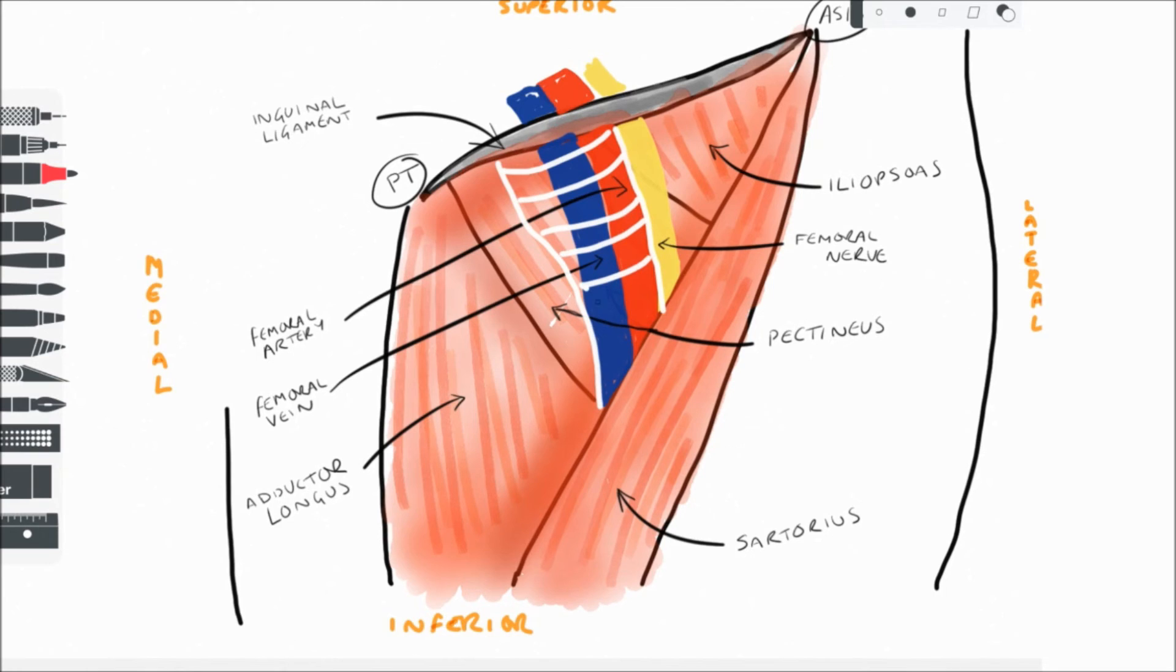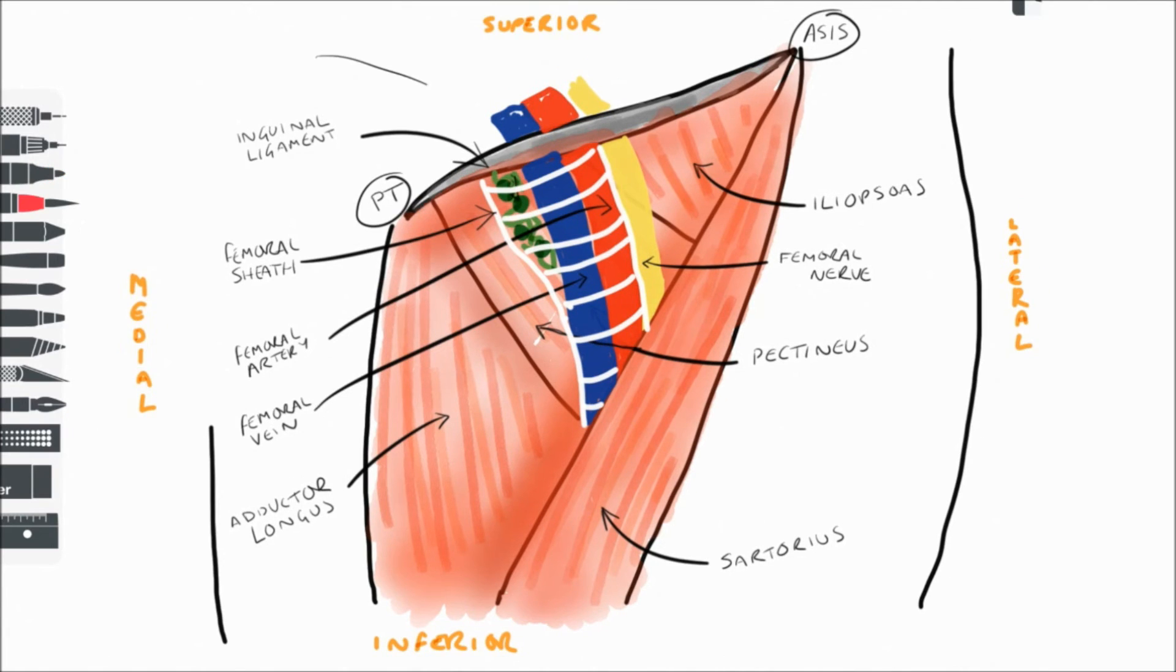The femoral artery and vein are contained within a fascial covering called the femoral sheath, and that's what's been drawn here. Also within the femoral sheath, just medial to the femoral vein, are some deep inguinal lymph nodes and lymph vessels. The space containing these lymph vessels is known as the femoral canal.